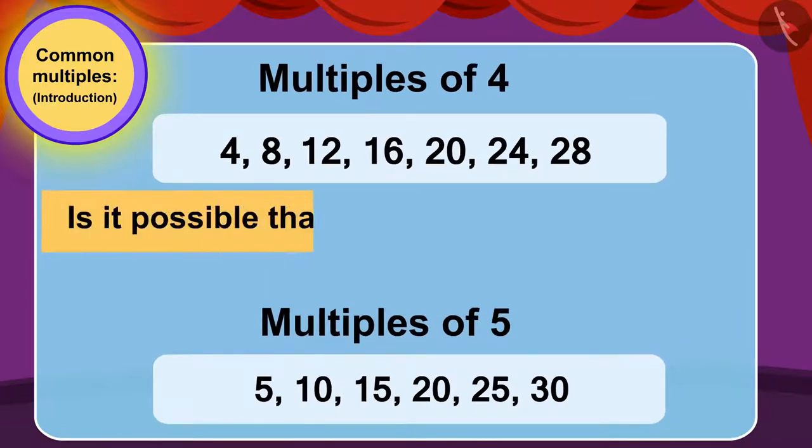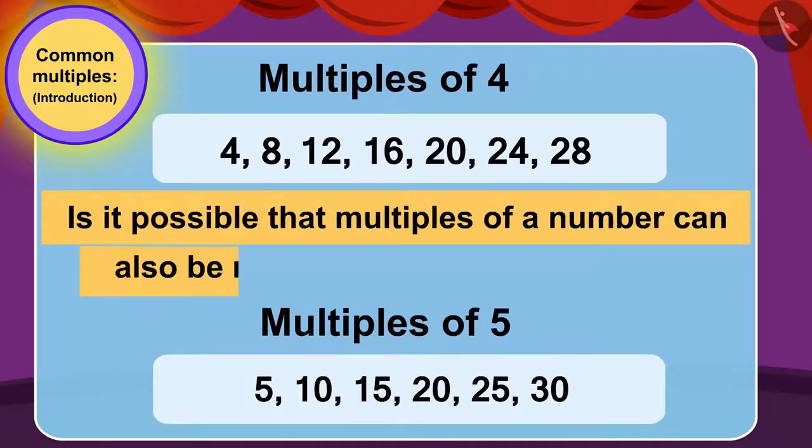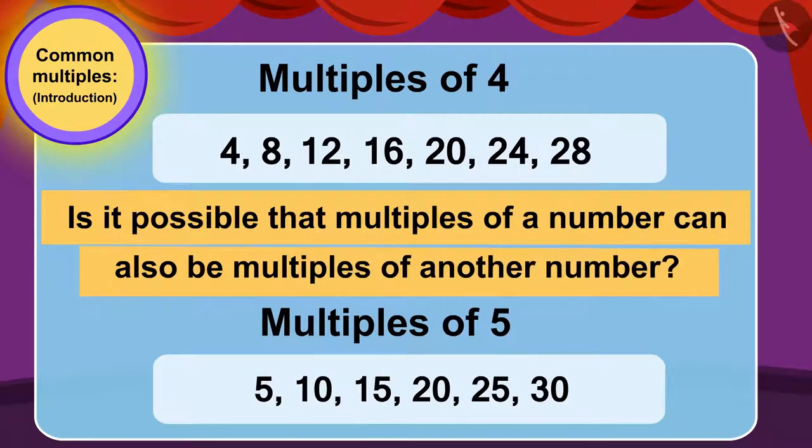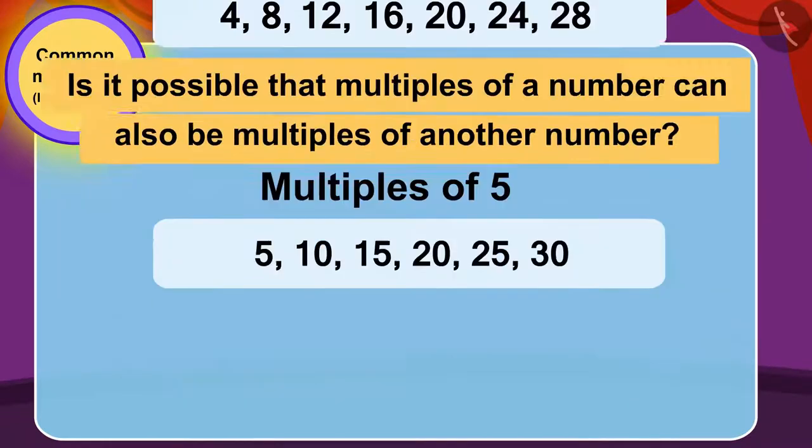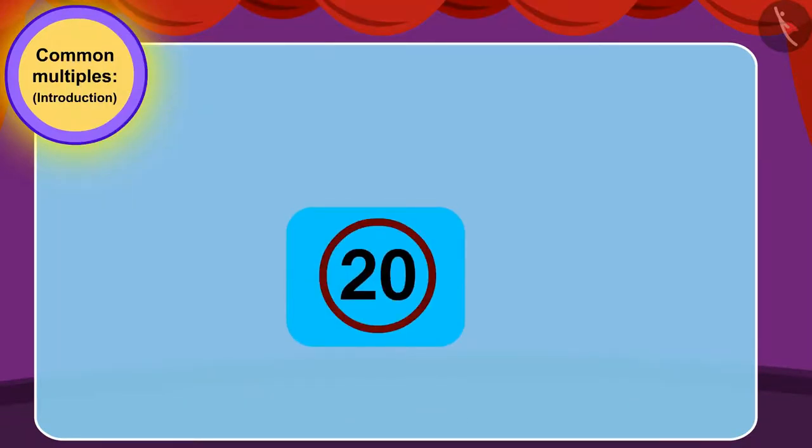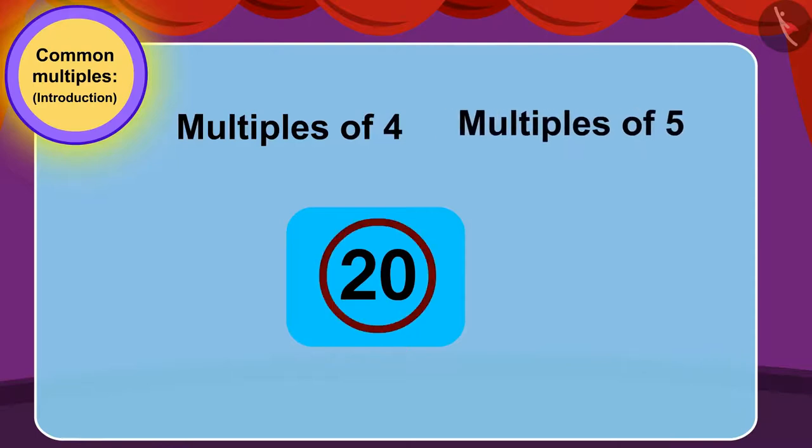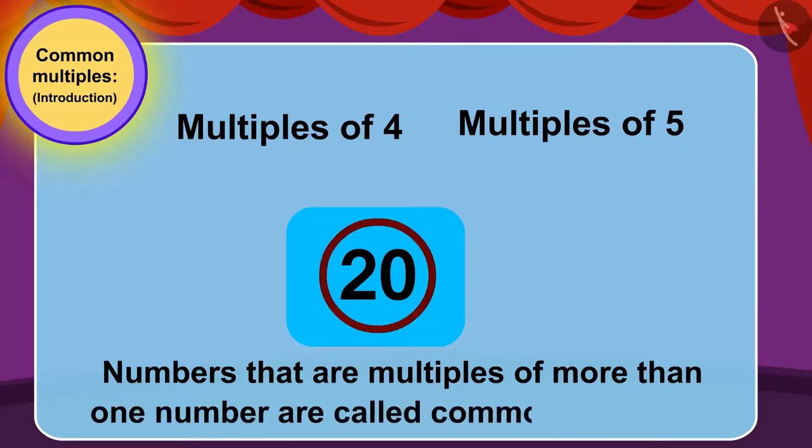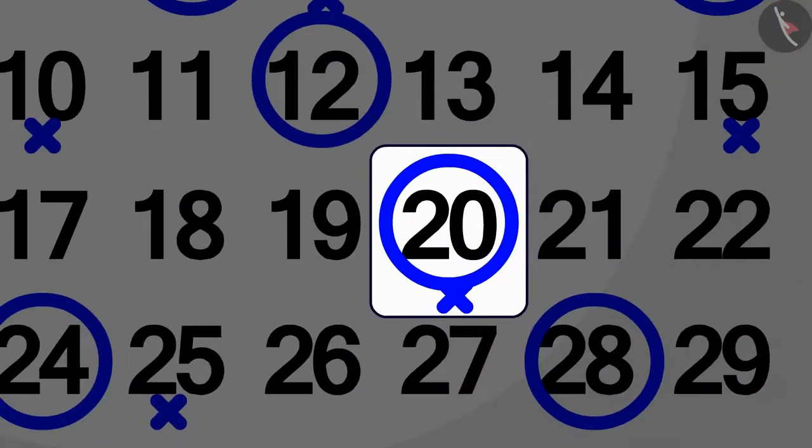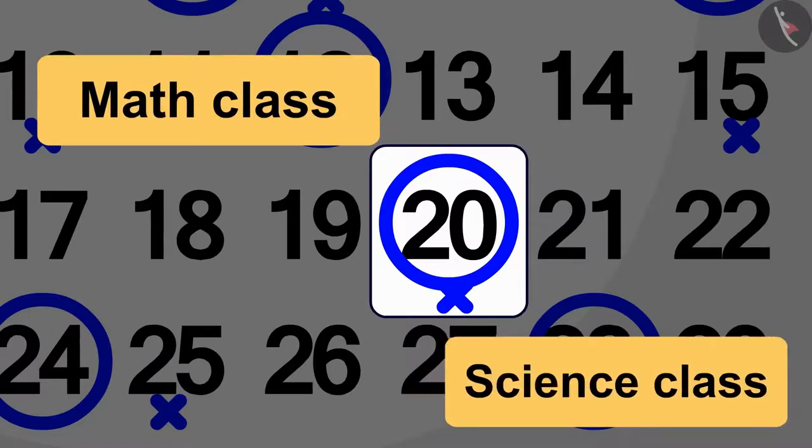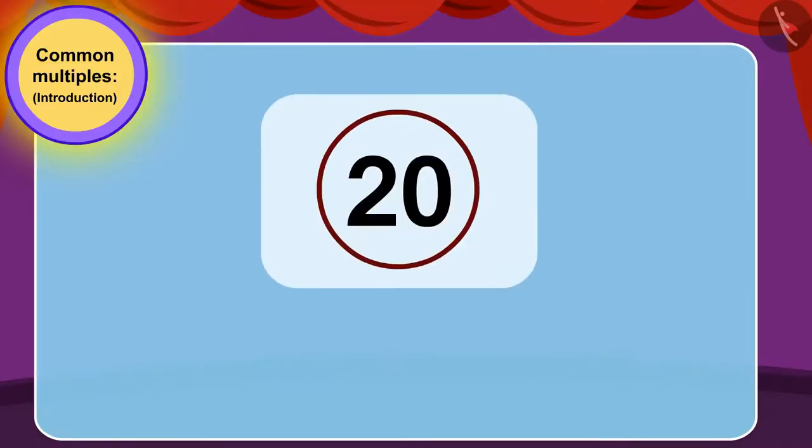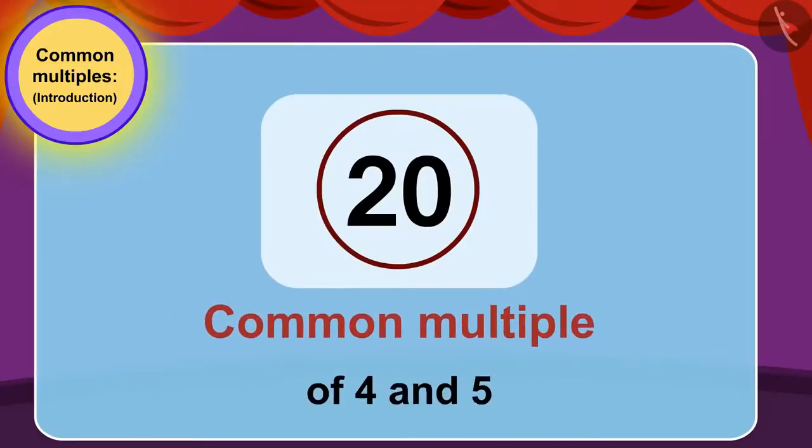Is it possible that multiples of a number can also be multiples of another number? Yes, it is quite possible that a number is a multiple of more than one number. Numbers that are multiples of more than one number are called common multiples. Here, on the twentieth, Bablu will have both mathematics and science classes. In other words, twenty is a common multiple of both four and five.